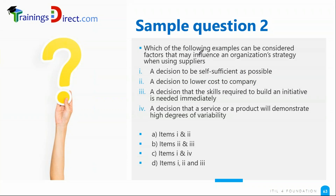Remember the decision-making factors for outsourcing to suppliers. A decision to be self-sufficient as possible — maybe it could be a factor, but usually the reasons are either to lower the cost, or because skills are required immediately. That's another key factor: we don't have the skills internally and we therefore want to go for a vendor. Two and three are definitely good answers.